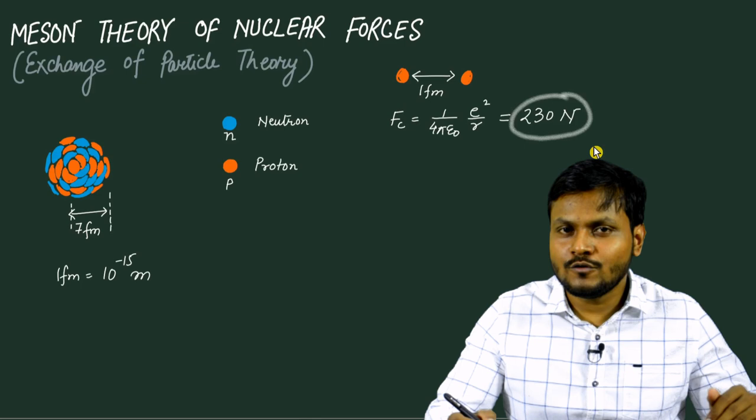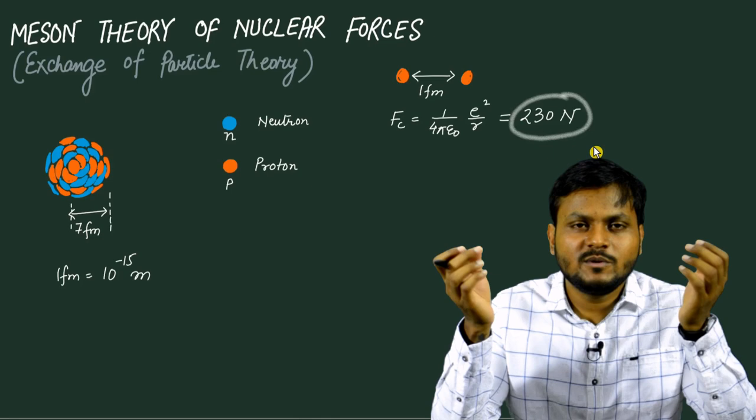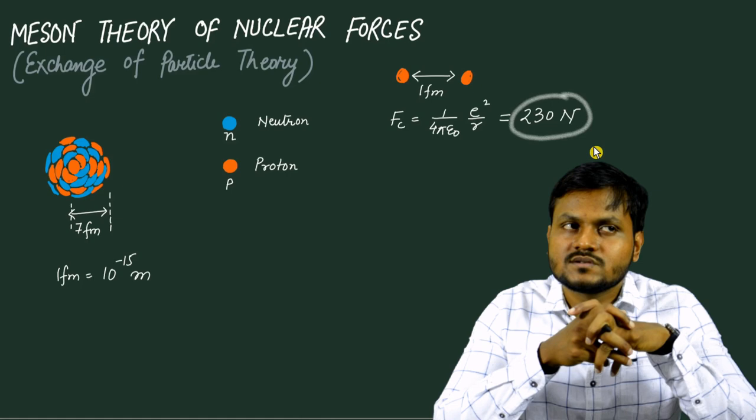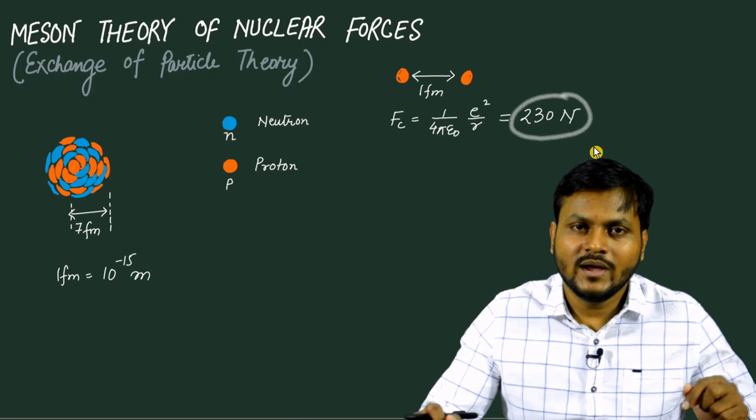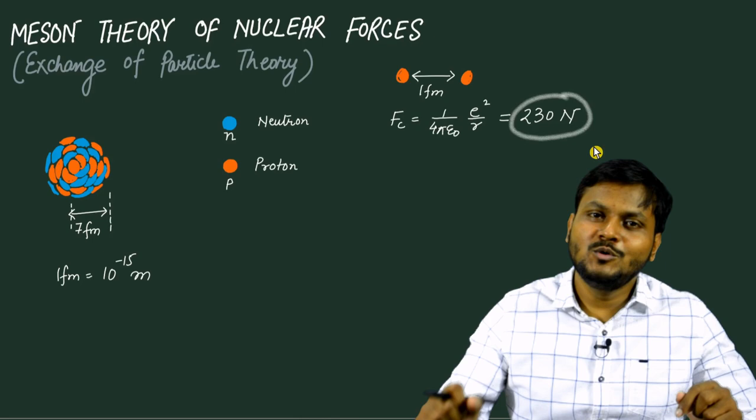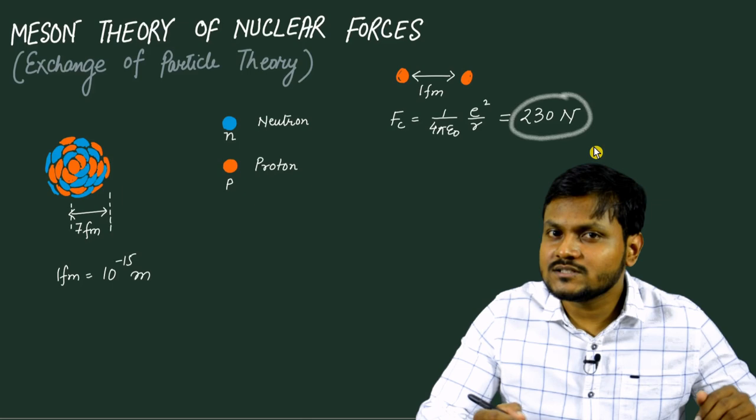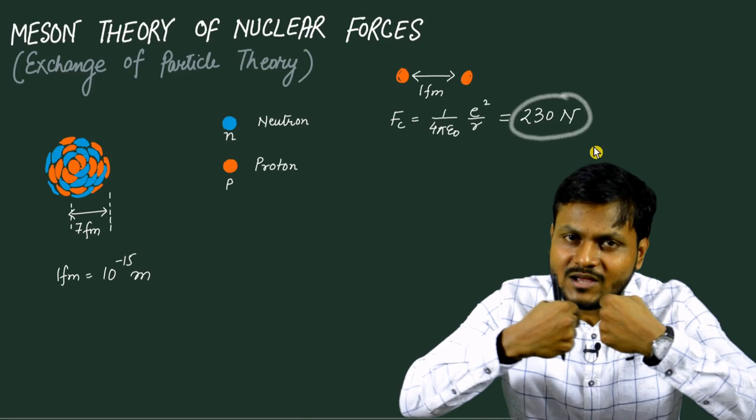This 230 newtons is actually quite a large force. Imagine there is a human child, maybe five, six, seven years old, who weighs around 23 kilograms. If you pick up a child who weighs 23 kilograms, he has basically a gravitational pull of 230 newtons downwards. That is the amount of force between two subatomic particles — two protons at a distance of one femtometer are repelling one another by a force of 230 newtons. That is quite huge.